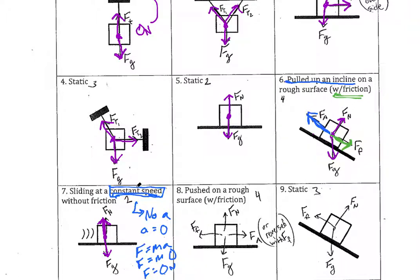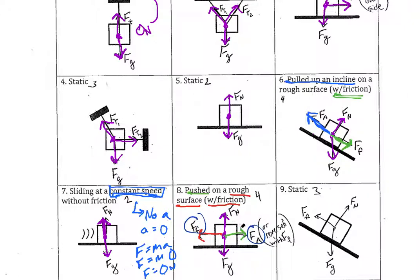If it did say constant speed with friction, we would add friction in one direction. Problem eight is very similar — it's a push on a rough surface with friction. The forces we know for sure are present: gravity going down, and the normal force acting upwards because the box isn't accelerating through the surface. It tells us it's being pushed, so we have an applied force. The rough surface tells us we have friction, and friction is always opposite to the applied force. You could also switch those two directions since we don't know which direction the object is traveling.